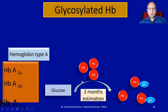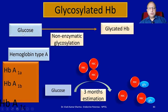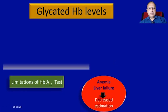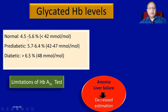Normal glycated hemoglobin level is 4.5 to 5.6 percent. In a pre-diabetic condition, it will be 5.7 to 6.4 percent. If a person has a glycated hemoglobin level of more than 6.5 percent, the person is declared diabetic. For management, maintaining 6.5 to 7 percent is considered adequate control; 7 to 9 percent is inadequate control; and more than 9 percent is a poor indicator of diabetes control.